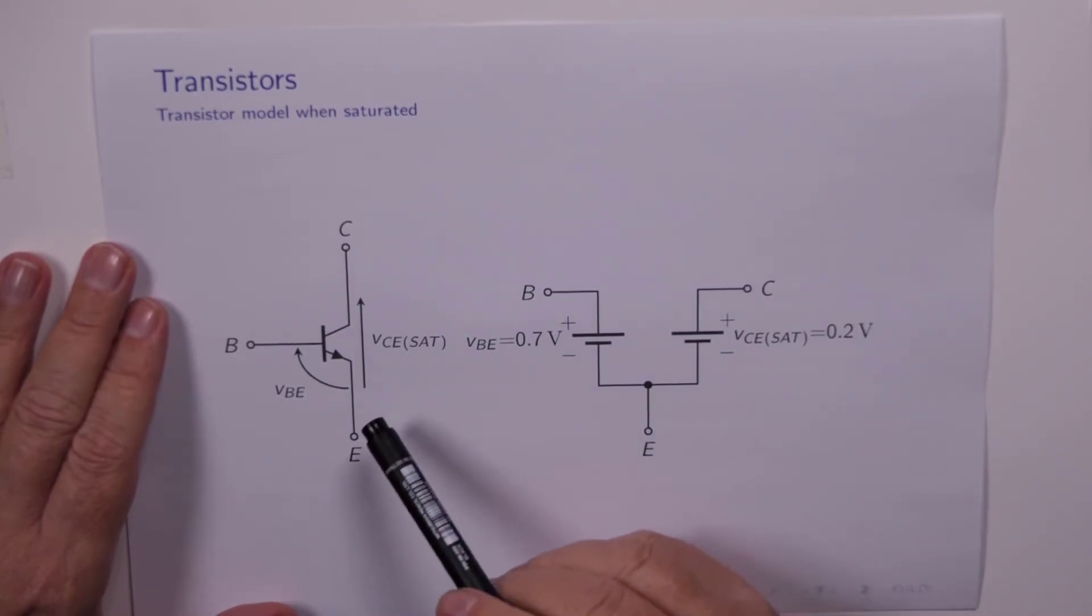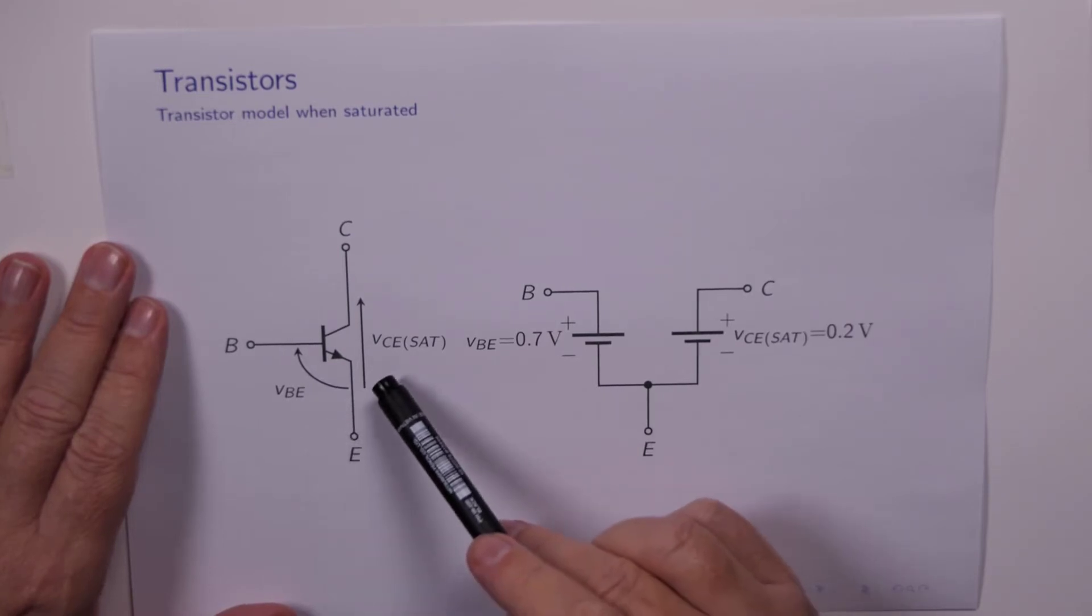That voltage for us is just a constant equal to 0.2 of a volt. So when the device is saturated, VBE is still 0.7 because the device is conducting, but VCE is equal to VCE sat, which is 0.2 of a volt.